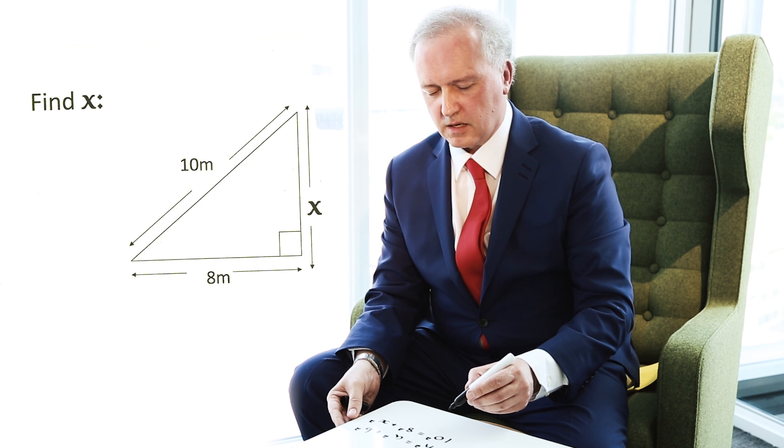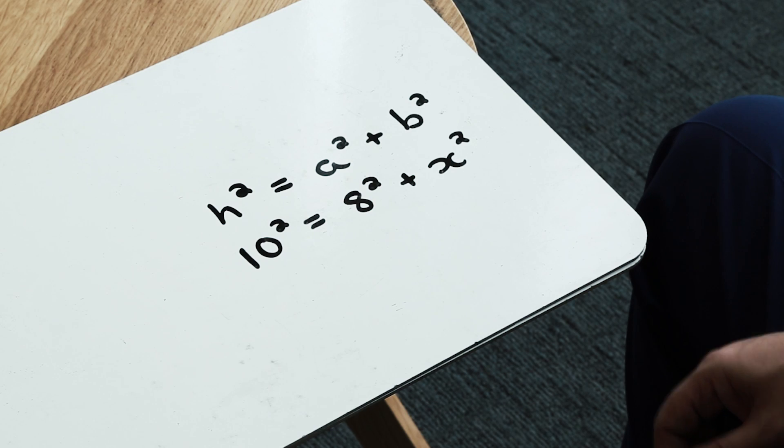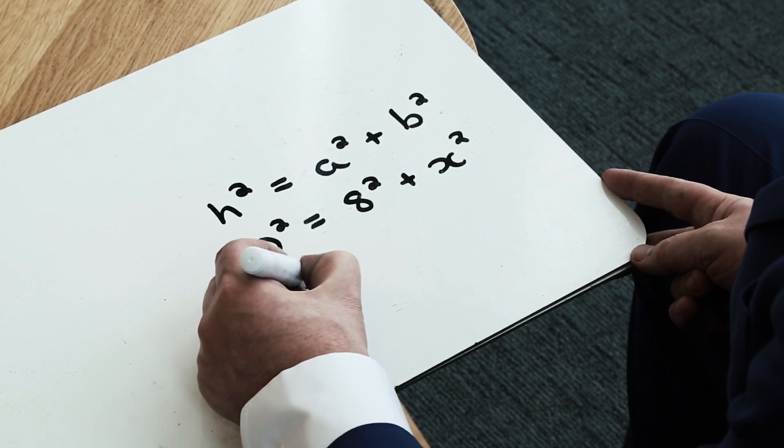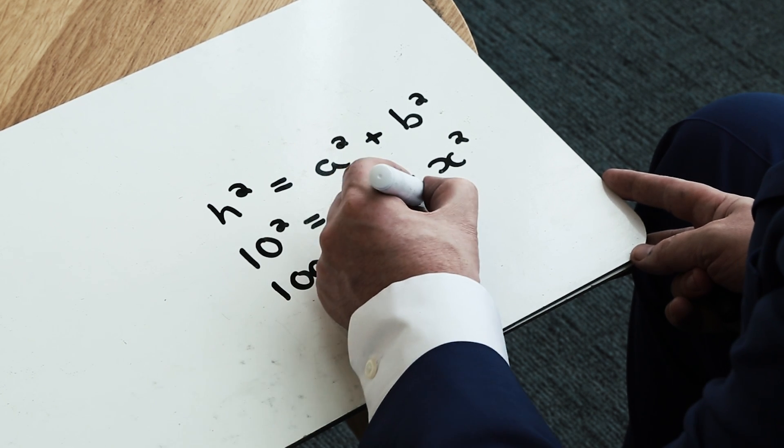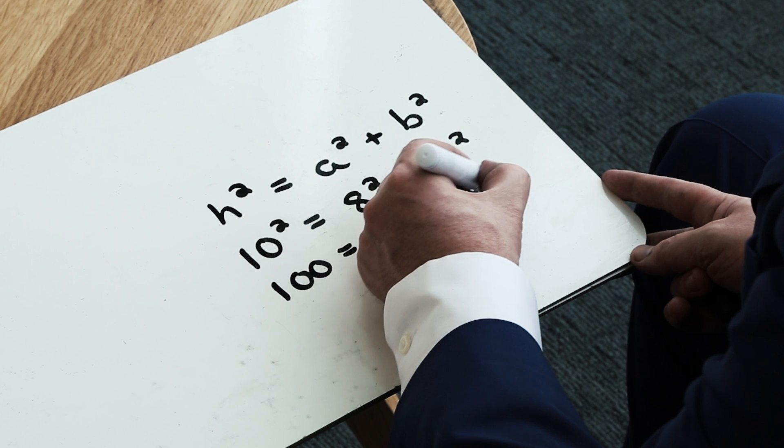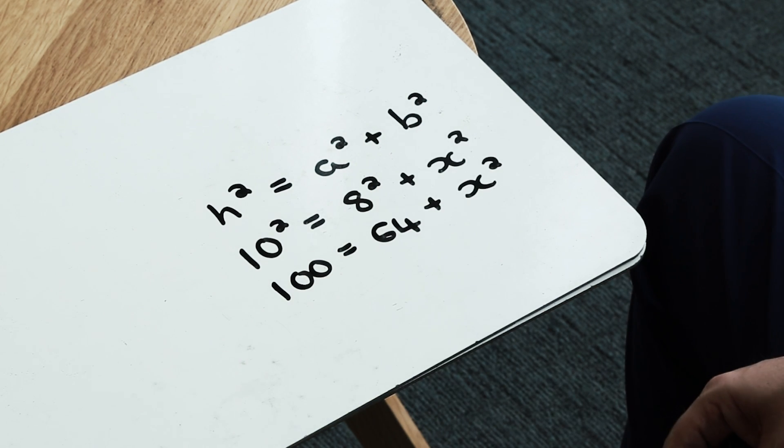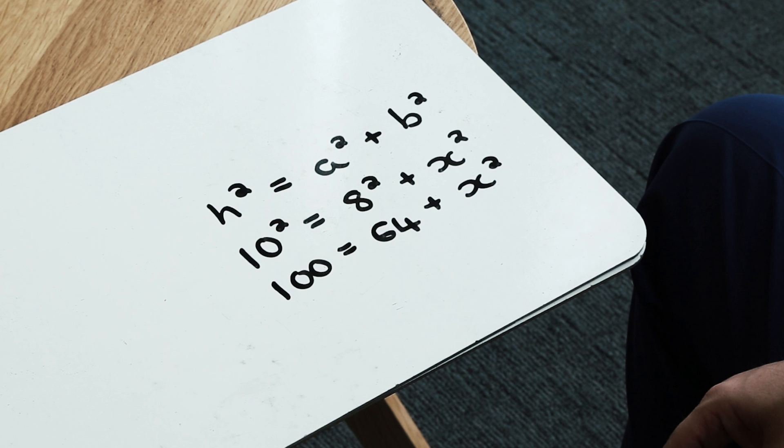My next method mark is established when I make progress on this, and I say that 10 squared is actually equal to 100. My 8 squared is equal to 64. And I've now got my x squared on the end there. So I know that 100 is equal to 64 plus x squared.